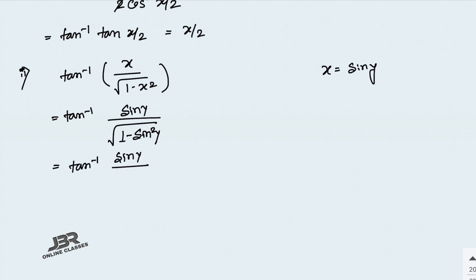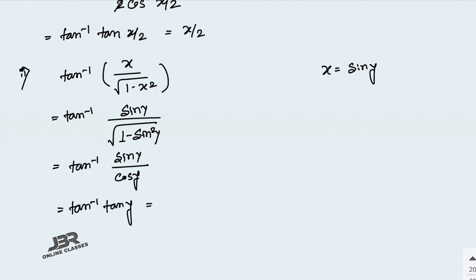Since 1 minus sin²y equals cos²y, the root gives cos y. So we have tan inverse of sin y over cos y, which is tan inverse of tan y. Tan and tan inverse cancel, leaving y. Since we let x equal sin y, then y equals sin inverse x. That is your answer.